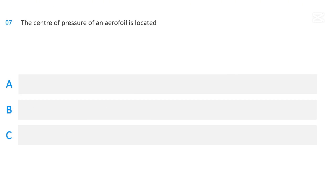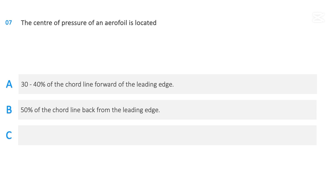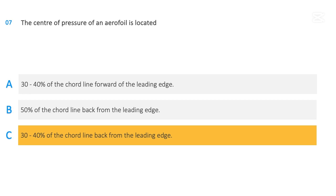The center of pressure of an aerofoil is located: 30–40% of the chord line forward of the leading edge; 50% of the chord line back from the leading edge; or 30–40% of the chord line back from the leading edge. The correct answer is 30–40% of the chord line back from the leading edge.